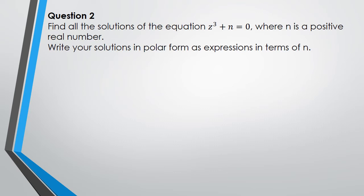Next question: we've been asked to find the solutions of the equation z³ + n = 0, where n is a positive real number. With this question, the first step you gotta do is rearrange it, and you're gonna get z³ = -n.